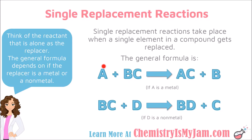The element that starts off by itself in the reactants can either be a metal or a nonmetal. It can either take a positive or a negative charge when it goes into the compound. Because of this, you end up with two general formulas for single replacement reactions. In the top case, A is a metal — something on the left-hand side of the periodic table — that normally takes a positive charge in an ionic compound. So when it reacts with this compound, it is going to replace the positive element.